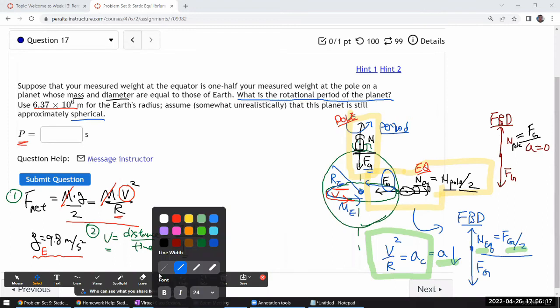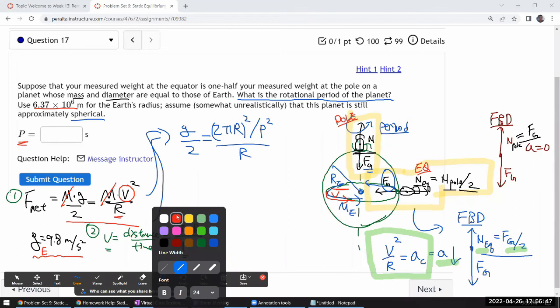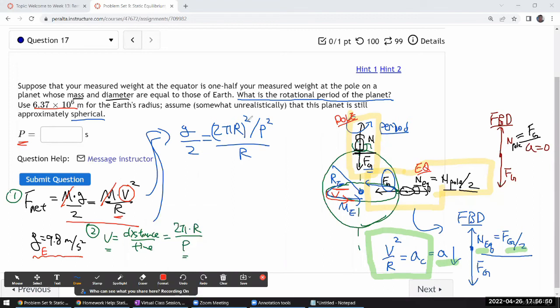So that will give me v in terms of all the known quantities and P, which we are trying to find. So let's take these equations one and two, combine them. Let me combine these two expressions and finish up the algebra. So combining these two, I'm just plugging in for v. I have g over 2 times this thing squared, 2πr squared over P squared, divided by... sorry, g over 2, that's the left hand side, that's equal to this right hand side.